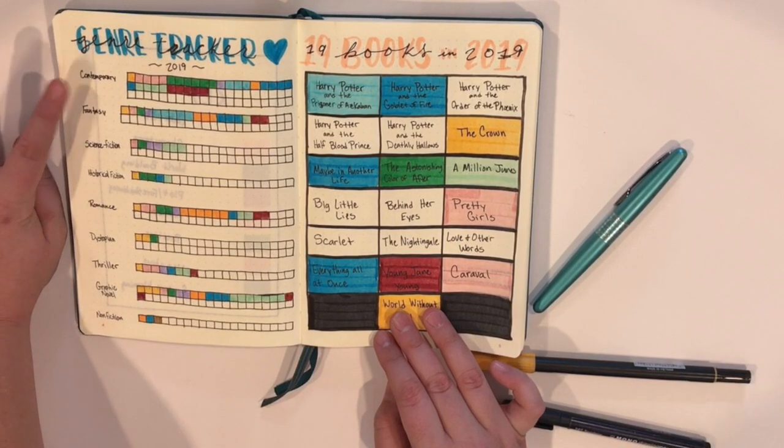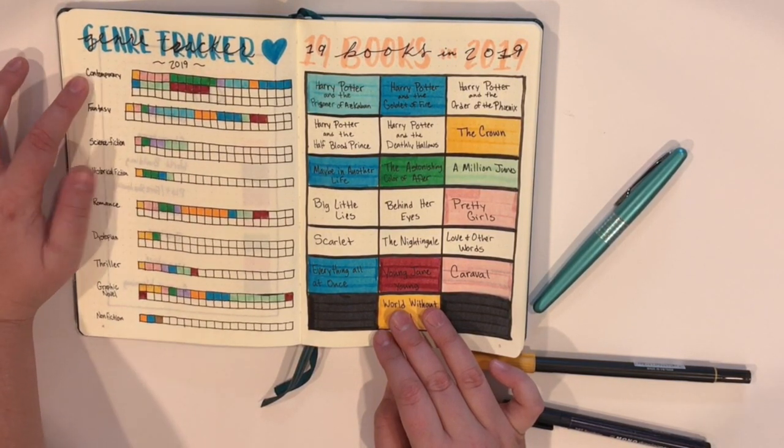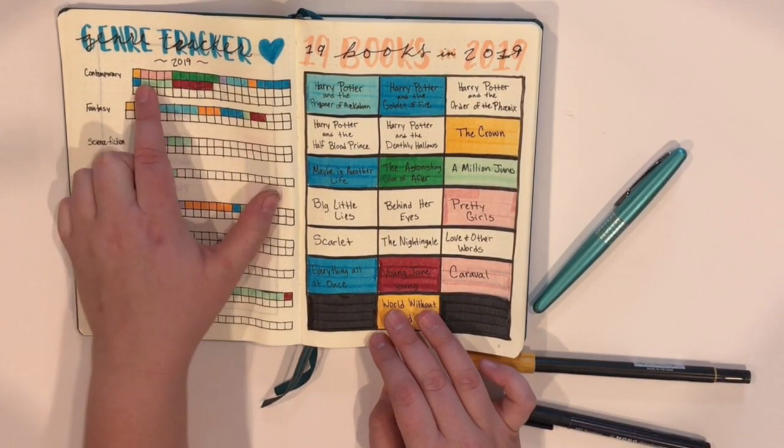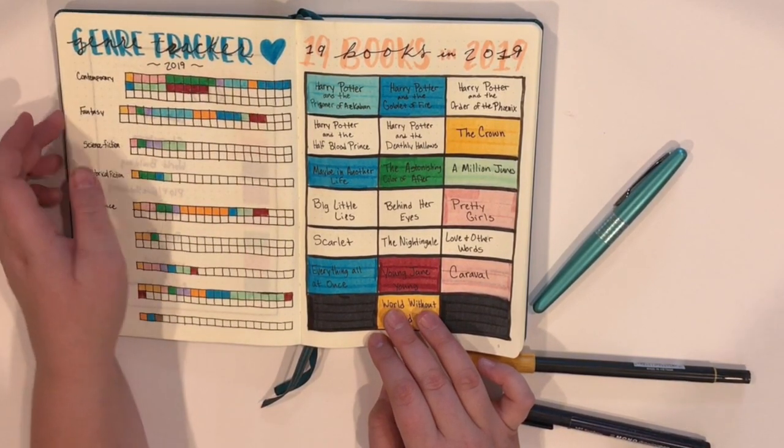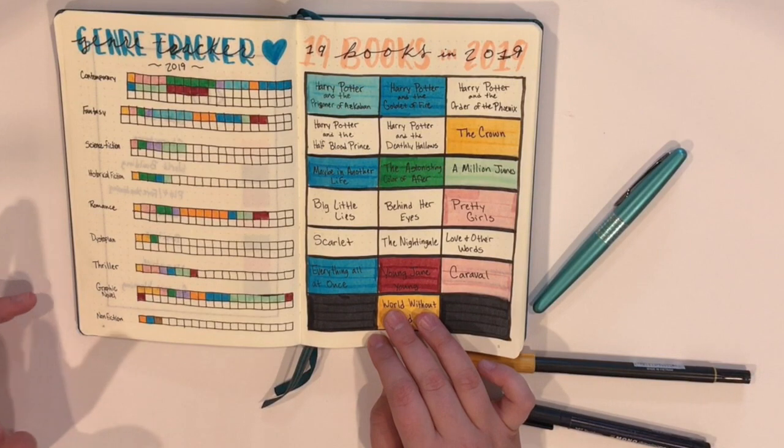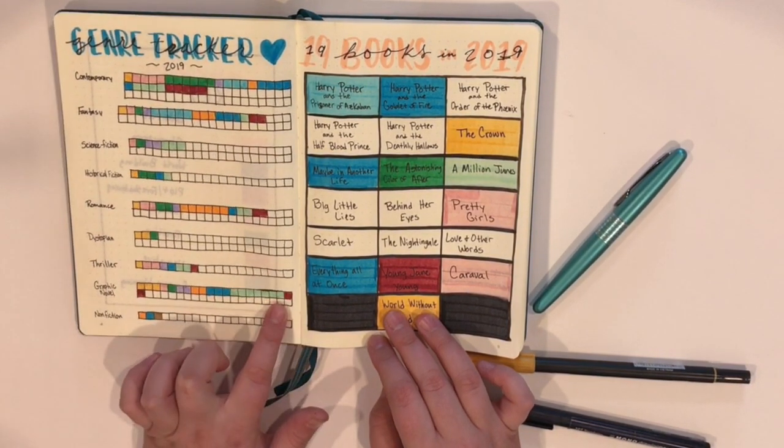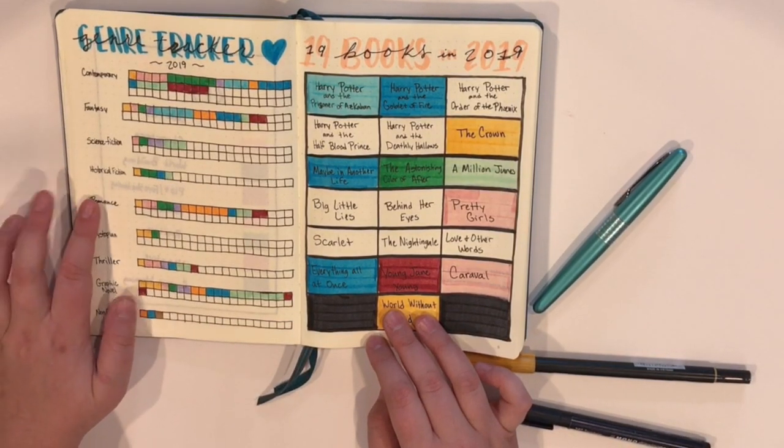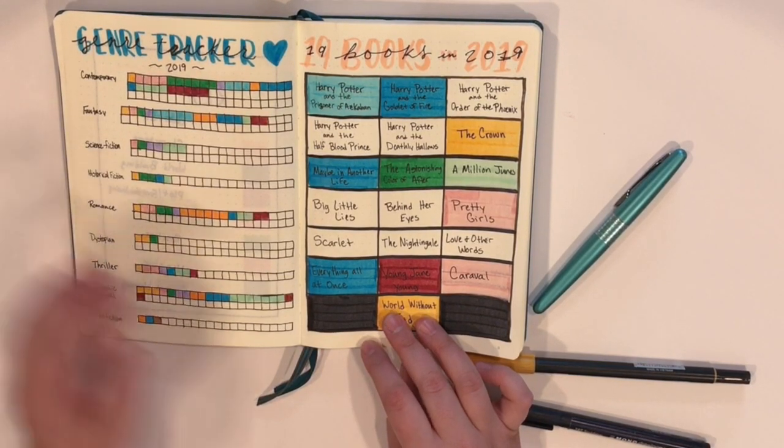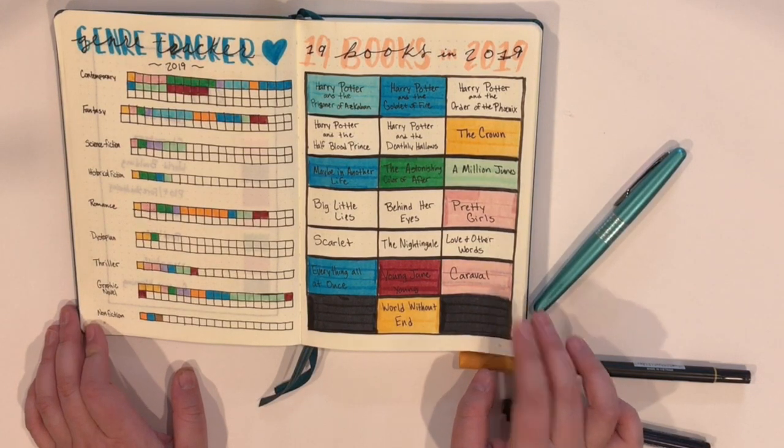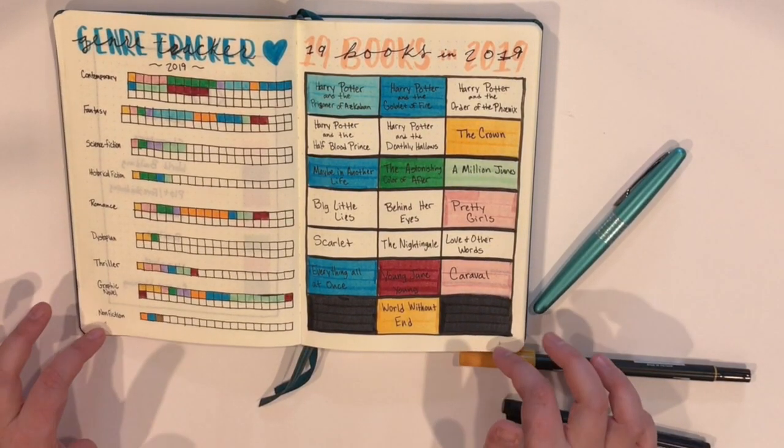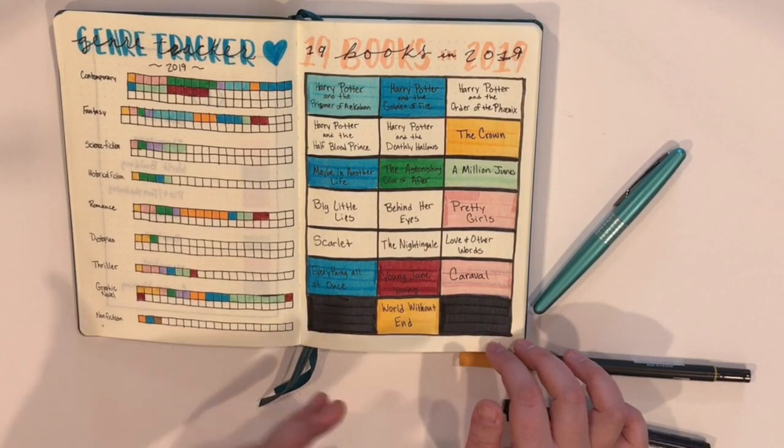As you can see, I'm still definitely reading more contemporary than anything else. You can see there's a big clump of it for Contemporary-a-thon. That was Re-read-a-thon, which would have been a lot of contemporaries. The next biggest one would probably be the graphic novels. And then next one would be romance or fantasy, which is pretty crazy. Anyways, this was just kind of a way to track that I was actually reading some things, things like historical fiction or non-fiction that I don't read a lot of. At least this was showing me that I am reading some.